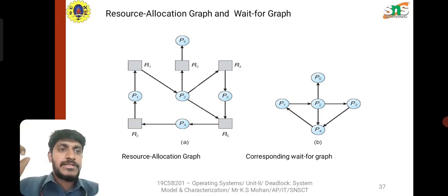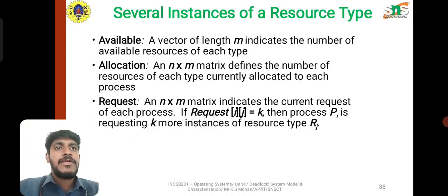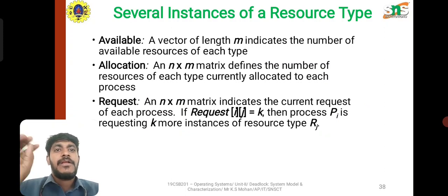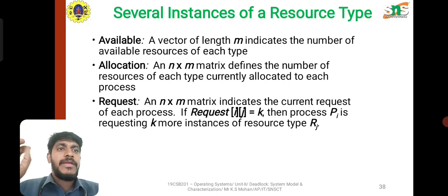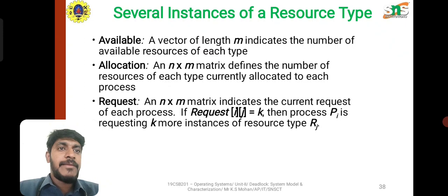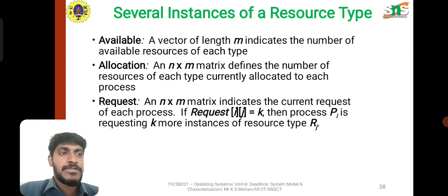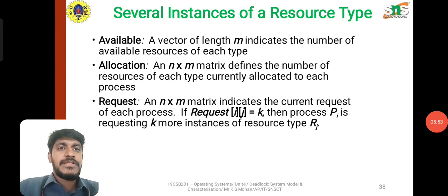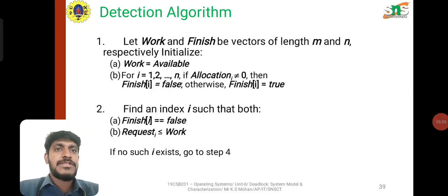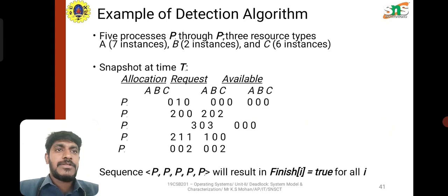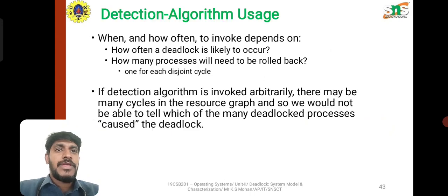For several instances of resource type, we use Available, Allocation, and Request. A vector of length m indicates the number of available resources of each type. The allocation matrix of size n×m defines the number of resources of each type currently allocated to each process. The detection algorithm uses these data structures to identify deadlock.